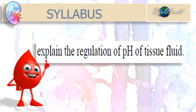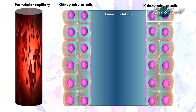Welcome to Bioworld, where I'm going to explain how blood pH is regulated by the kidney. I shall use this simple diagram to help explain blood pH regulation. Here is the peritubular capillary that surrounds the nephron, and over here I have a cross-section of the tubule in the nephron.